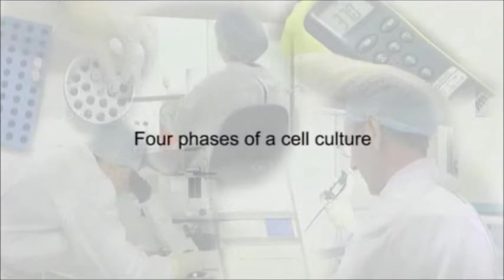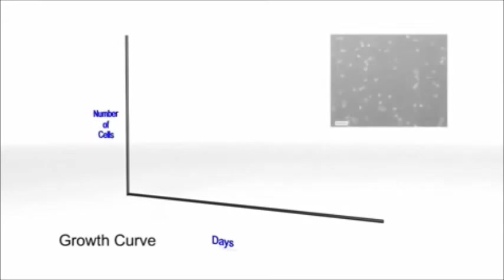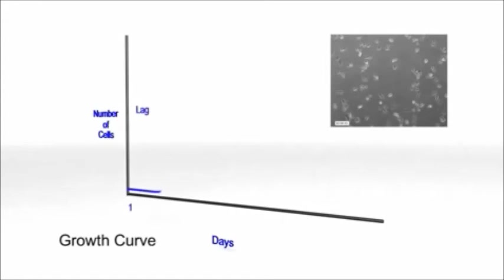The life of a cell culture can be divided into four phases. Here we will look at the growth curve of a CHO cell line. You should be aware that other cell lines may grow at different rates. In the initial lag phase of the culture, cells are adapting to the culture conditions and the growth rate is less than optimal.